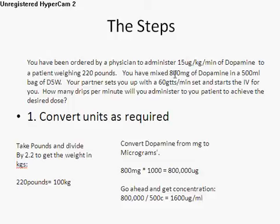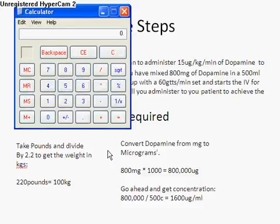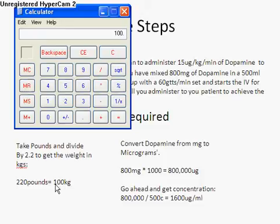The first thing we have to look at is the patient's weight, because the formula requires that the patient's weight be expressed in kilograms. However, we are provided with the patient's weight in pounds, so we need to convert. We will take the patient's weight in pounds and divide it by 2.2 to get the weight in kilograms. Using the calculator, 220 pounds divided by 2.2 gives us 100 kilograms.